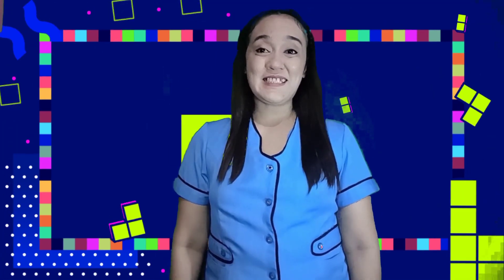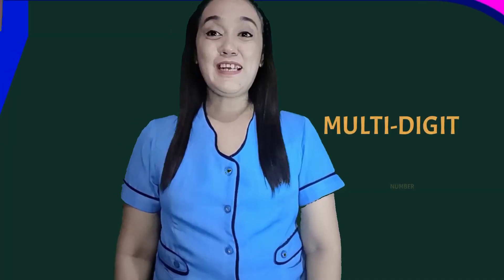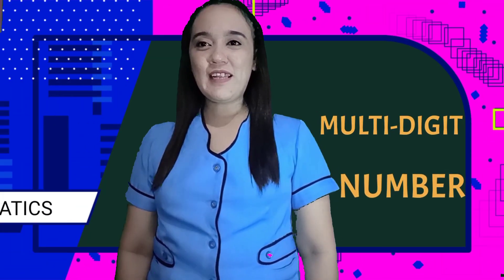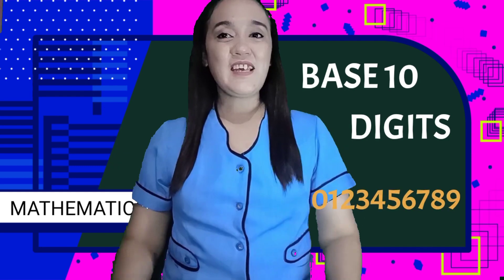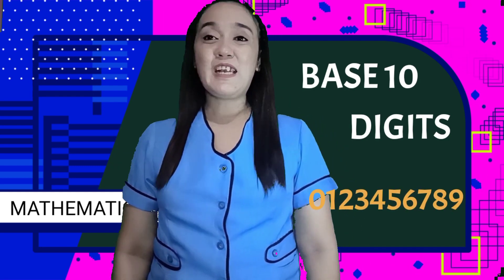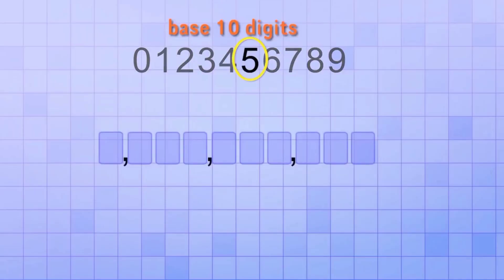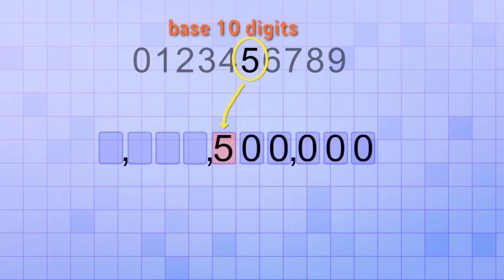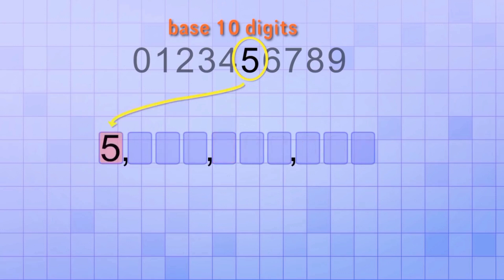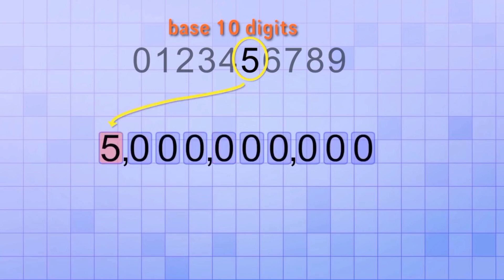Seeing all these numbers together, I hope you understand what we mean by place value. In a multi-digit number, the digit in each place value determines its value. Even though we only have 10 digits, each digit can stand for different amounts depending on its place. If digit 5 is in the ones place, its value is 5. But if 5 is in the tens place, its value is 50. If 5 is in the hundreds place, its value is 500. And the same holds for bigger places — 5 in the hundred thousands place means its value is 500,000. And if 5 is in the billions place, its value is 5 billion.